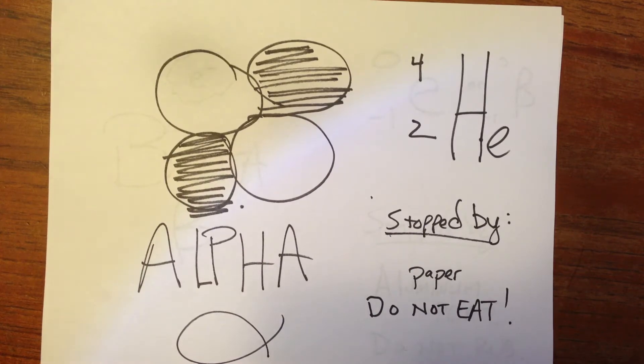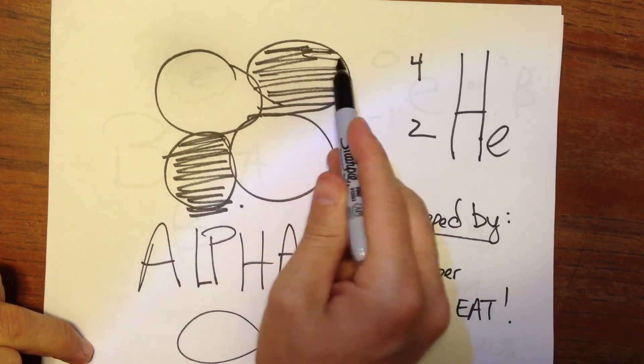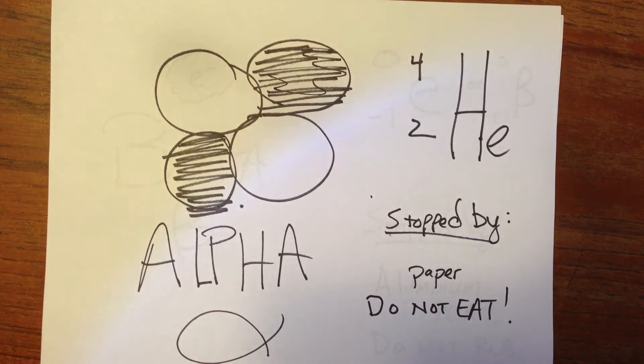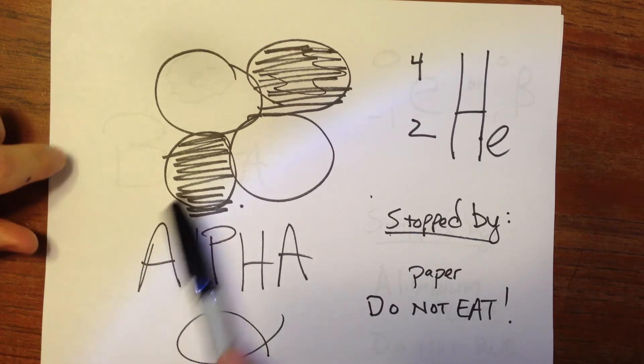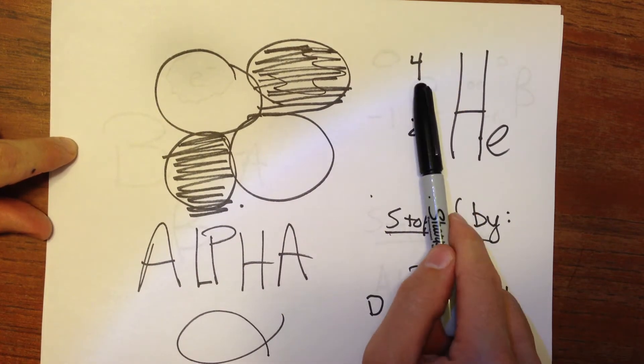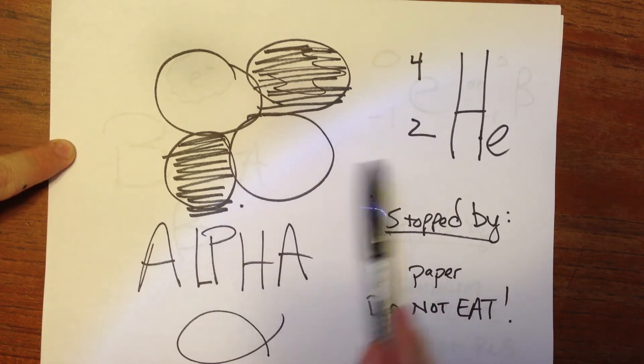The first particle that we'll deal with is the alpha particle. The dark circles here represent protons, and the clear ones represent neutrons, and an alpha particle has two of each, so its total mass is four, and it has two protons.